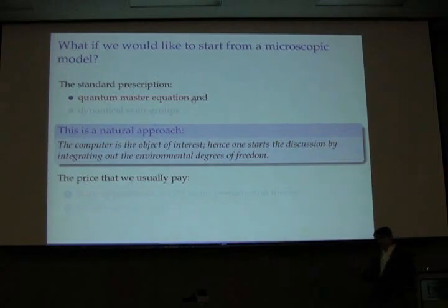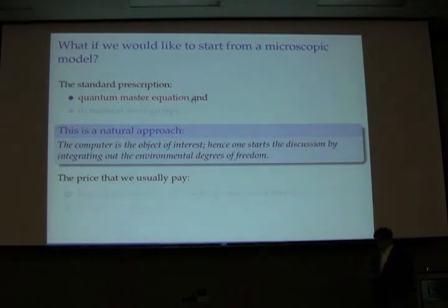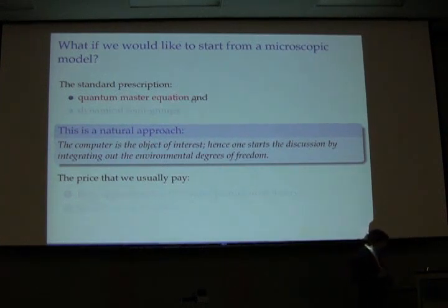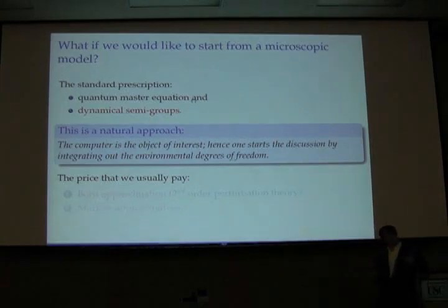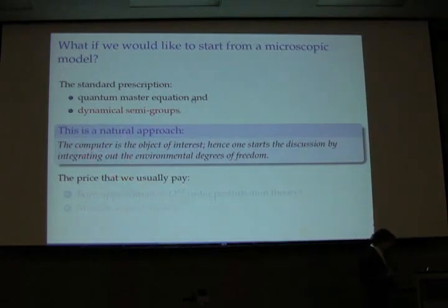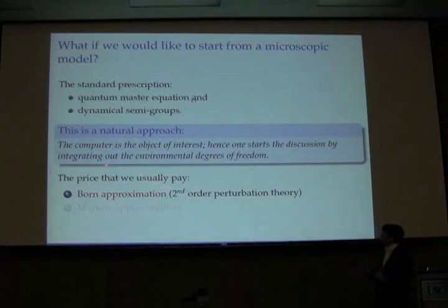What if we would like to start from a microscopic Hamiltonian for your computer? The standard prescription is to use the quantum master equation and dynamical semi-groups. This is a very natural approach — you trace out the environment and follow the evolution of the computer. But you pay a price: the Born-Markov approximation. You first need to do the Born approximation, which is second-order perturbation theory, and then you apply the Markov assumption.